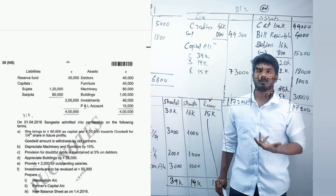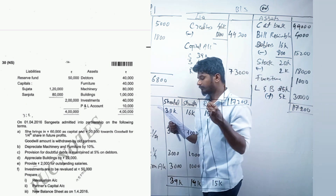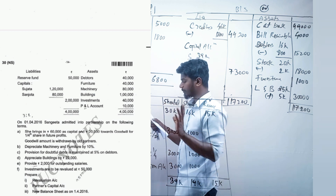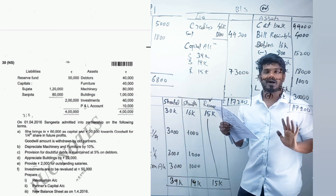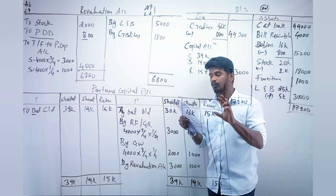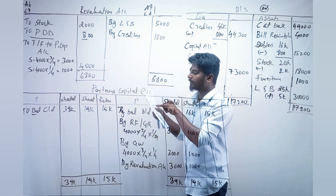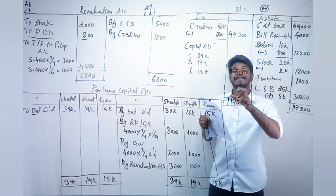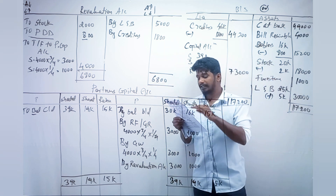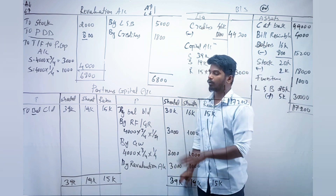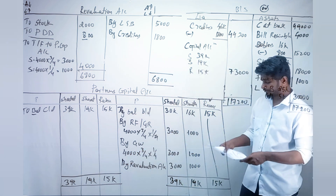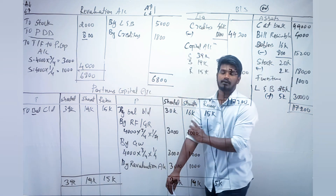The third item is goodwill. Read the goodwill adjustment carefully as the question may specify conditions. Here goodwill is 20,000 for a one-fifth share. If half goodwill is withdrawn by old partners, divide the goodwill by two — so share 10,000 in old ratio. If nothing specific is mentioned, share the full goodwill amount to old partners in old ratio.